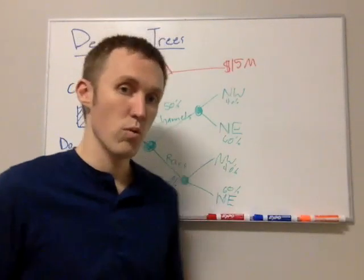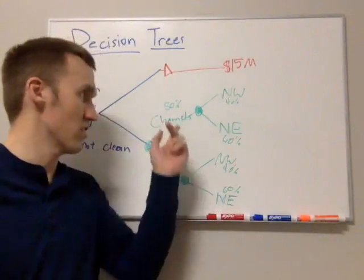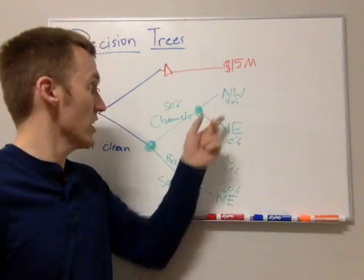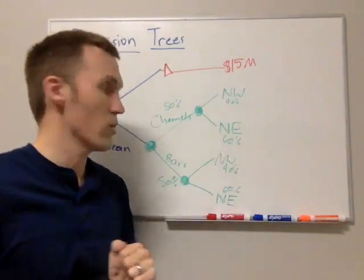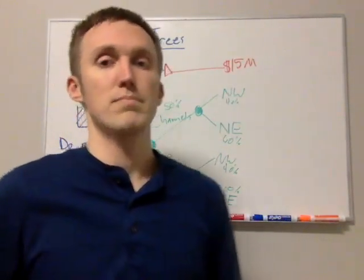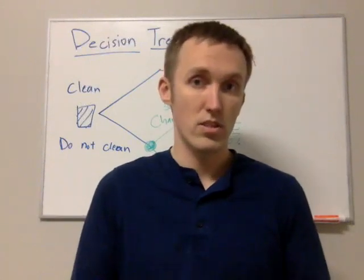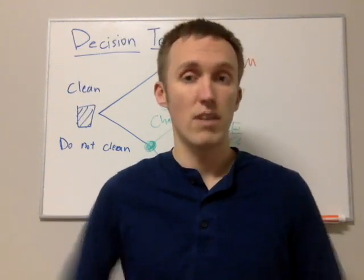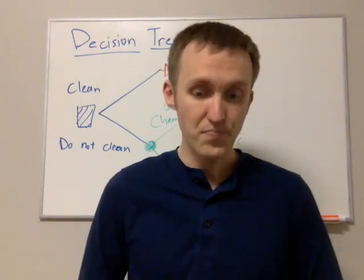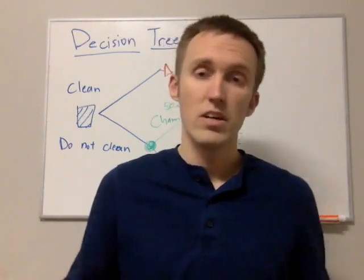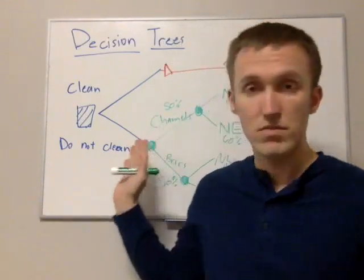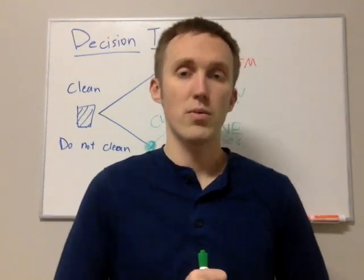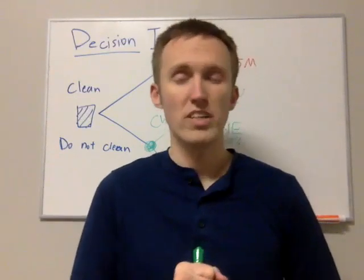Where are these numbers coming from — the 40/60 and 50/50? This is actually what we'll talk about for the rest of the semester: how do you generate uncertainty models for geological structures? It would involve some modeling — running flow simulations using hydrology and different types of geologic structures and materials — and you would come up with these probabilities that way. For now, just assume we've run some models and come up with these numbers.